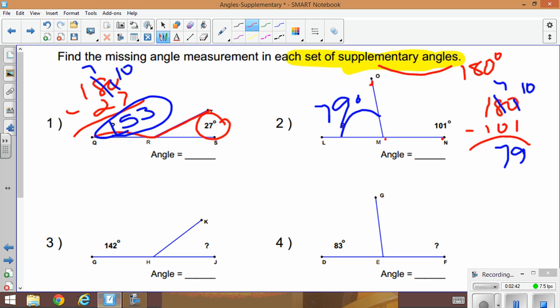Okay, example number three. I know that angle GHK and KHJ will add up to 180 degrees because they are supplementary. So I'm going to take 180 and minus 142. 10 minus 2 is 8, 7 minus 4 is 3. So our missing angle is 38 degrees.